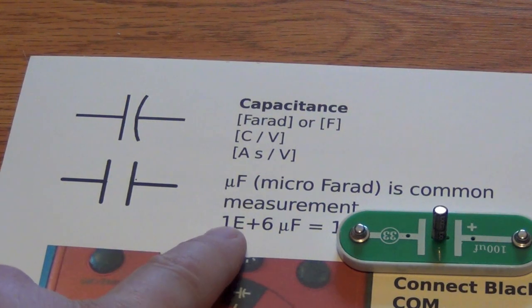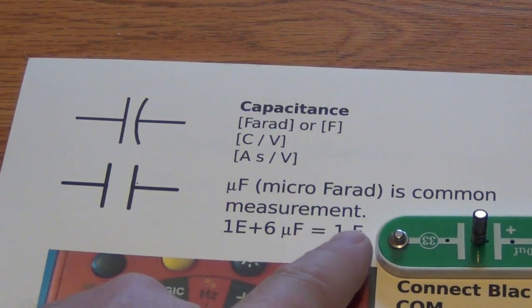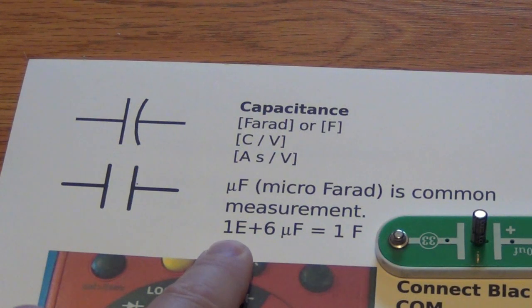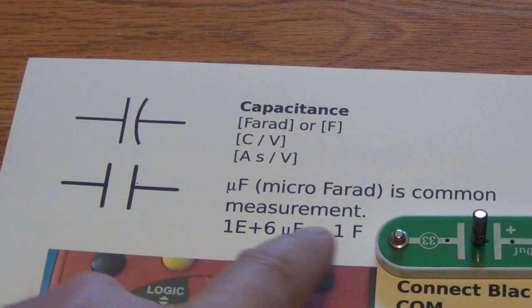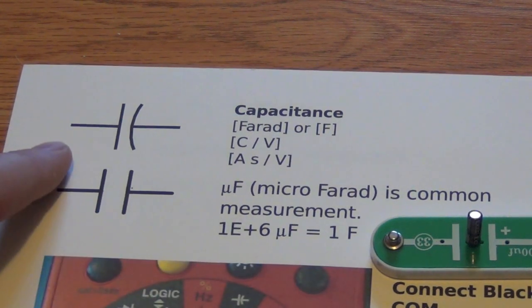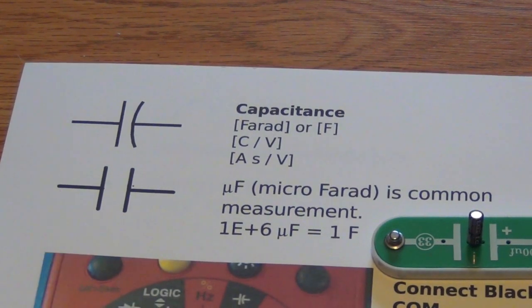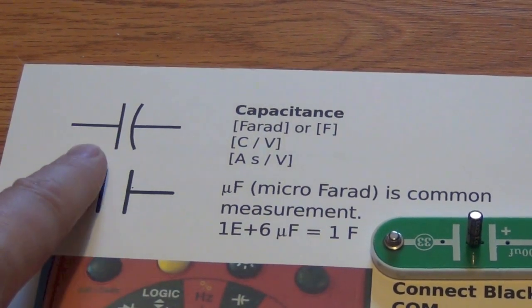A farad is really quite large, and the conversion is that 1 times 10 to the 6 microfarads is 1 farad. And here's the symbol for a capacitor - either one of those. This is the standard symbol.